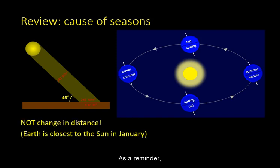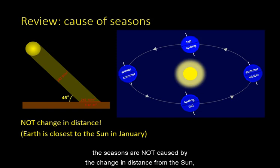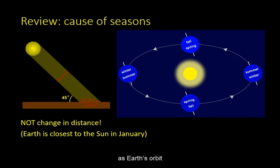As a reminder, the Seasons are not caused by the change in distance from the Sun, as Earth's orbit is very nearly circular.